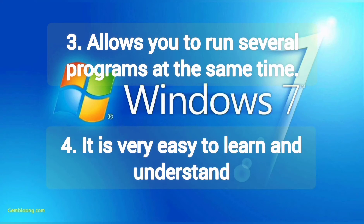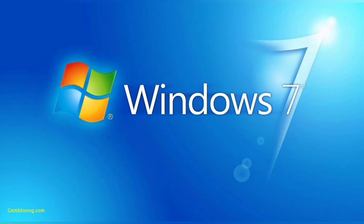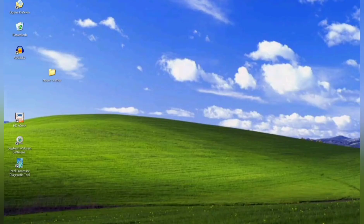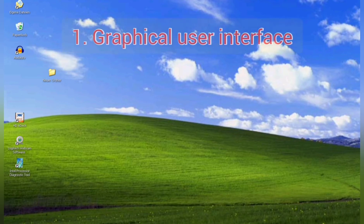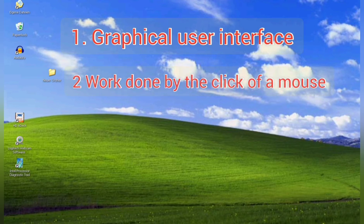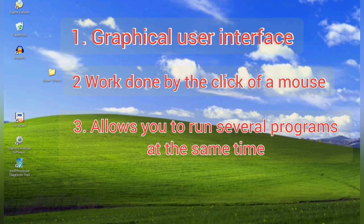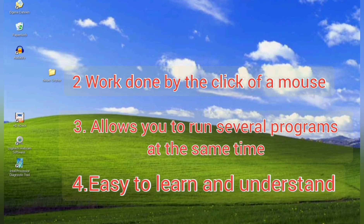Next feature: Windows 7 is very easy to learn and understand. Using icons and mouse clicks makes it easy to use. These are the four features of Windows 7: first, it is a graphical user interface; second, most work is done by the click of a mouse; third, it allows you to run several programs at the same time; and fourth, it is very easy to learn and understand.